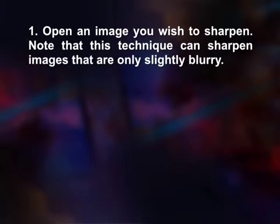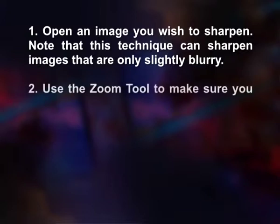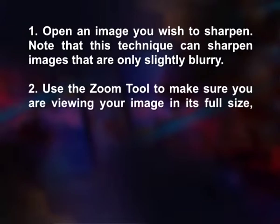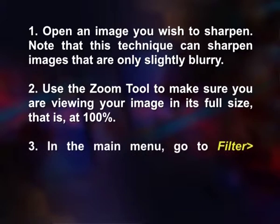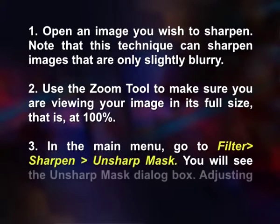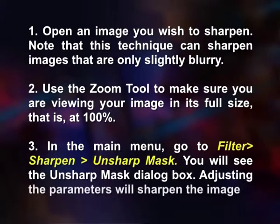Sharpening: If your digital photos are slightly out of focus, you can use a basic sharpening technique to make your images look crisper. Note that this technique can sharpen images that are only slightly blurry. To sharpen your photo: (1) Open the image. (2) Use the zoom tool to view your image at 100%. (3) Go to Filter > Sharpen > Unsharp Mask. You will see the Unsharp Mask dialog box — adjusting the parameters will sharpen the image.